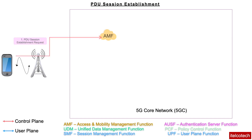In the UE-initiated PDU session, the first step is that the UE sends a request to the AMF, providing all the details such as the PDU session ID it wants to activate, and the kind of service depending upon the slice it is using — it will inform about the NSSAI, which slice it wants to use.